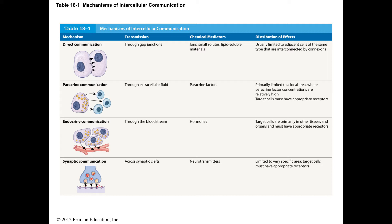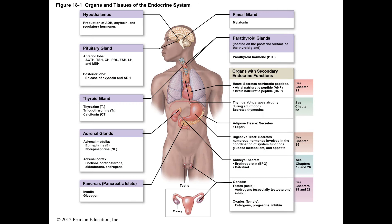The hormone will either cause the permeability of the cell to change so that ions can come into the cell, or it's going to change an activity going on inside the cell. Let me show you all the different endocrine organs. Some endocrine organs and tissues have producing hormones as their primary job. Those are: the hypothalamus, the pituitary gland, the thyroid gland, adrenal gland, the pancreas, the pineal gland, and the parathyroid glands.